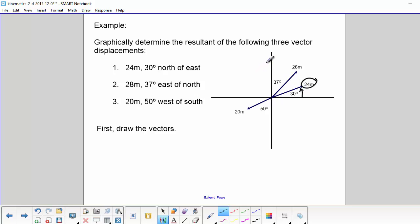The second vector was 28 meters at 37 degrees east of north. So we start at north and our angle is 37 degrees east of that. And our final vector is 20 meters, 50 degrees west of south. So we start at south and we go 50 degrees west of south.